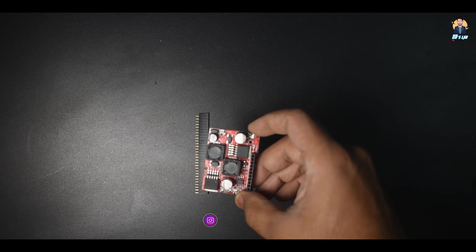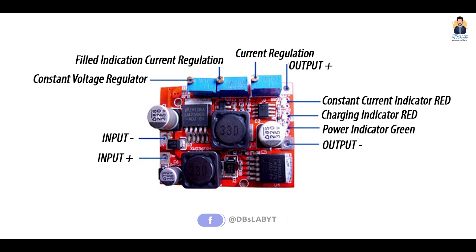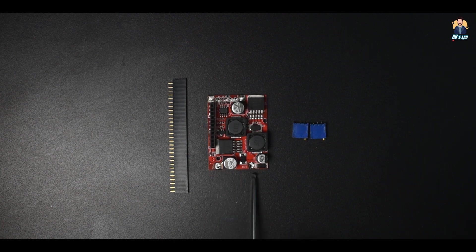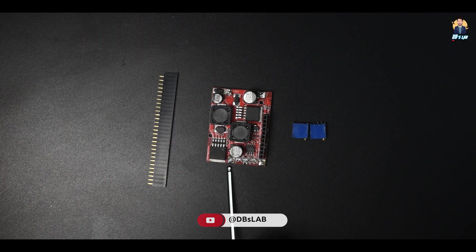The buck boost converter I'm using has current control. Here is a pinout diagram. So as you can see there are two main input lines: input plus and input minus. There are two output lines: output plus and output minus. And there are three potentiometers.